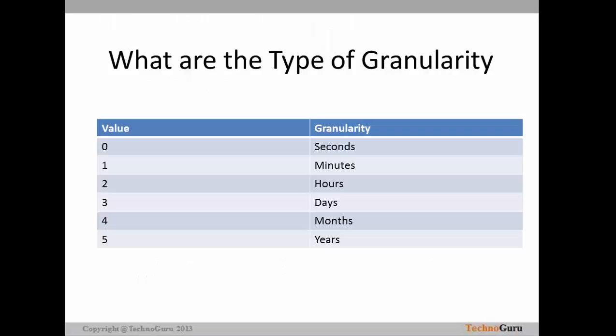The query SELECT TIMELINE_GRANULARITY FROM C_REPOS_DB_RELEASE returns a result of 0 through 5. 0 means granularity in seconds, 1 means minutes, 2 is hours, 3 is days, 4 is months, and 5 is years. These are the types of granularity that can be configured in MDM during installation.